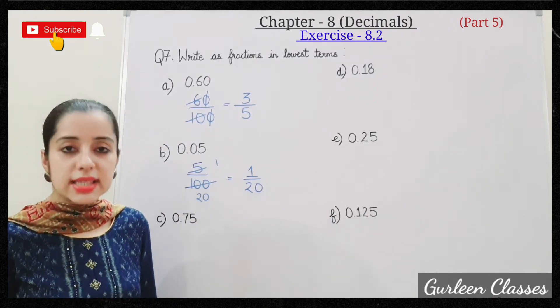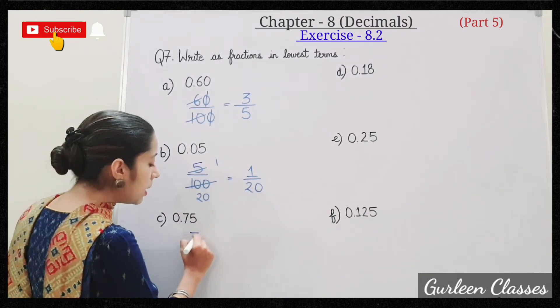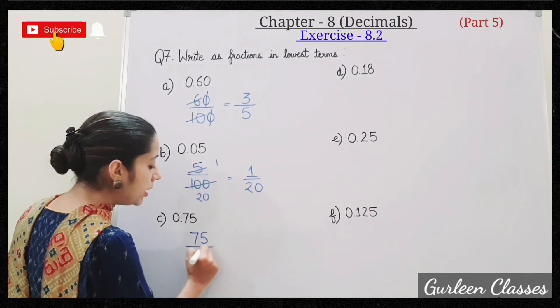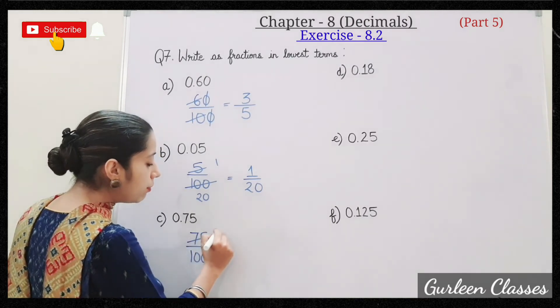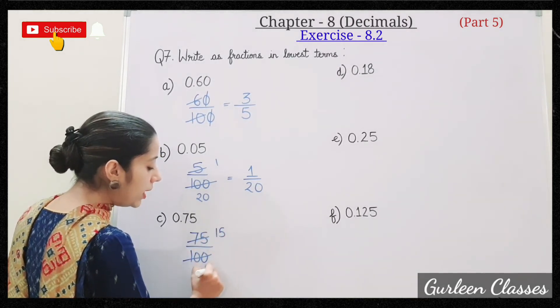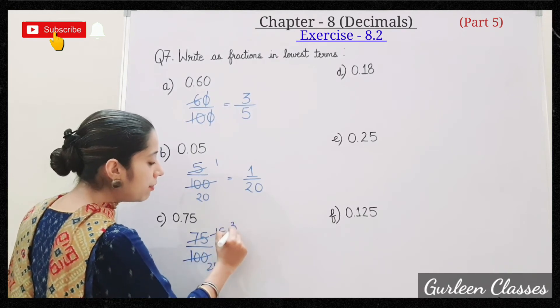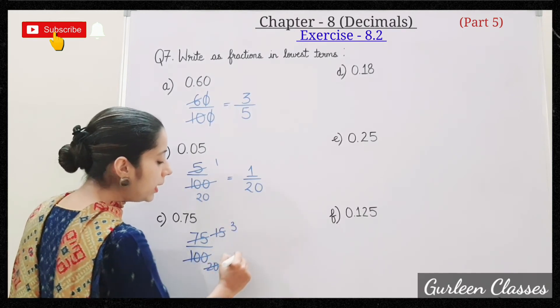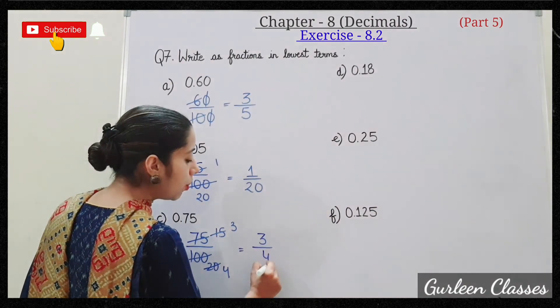C: 0.75. So after decimal point we have 2 digits. 75 upon 100. 5 fifteens are 75, 5 twenties are 100. 5 threes are 15, 5 fours are 20. Answer is 3 upon 4.